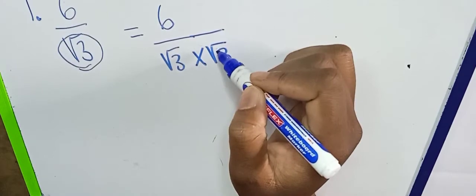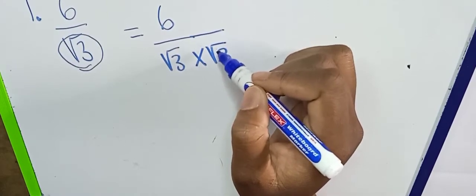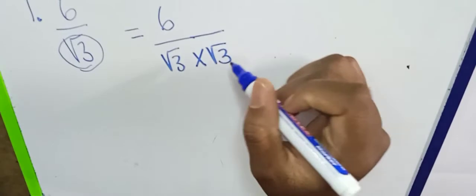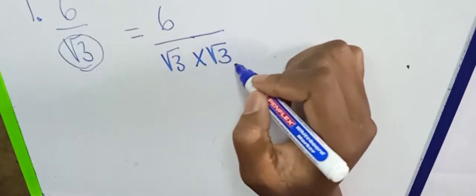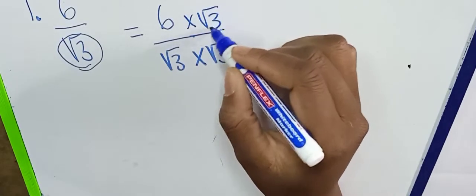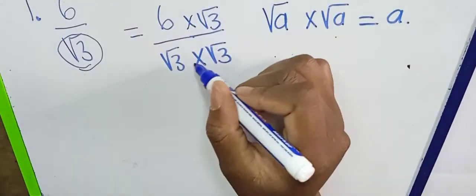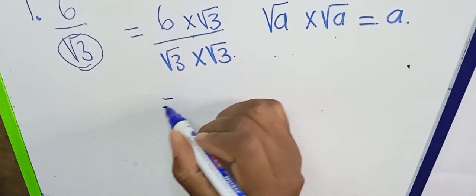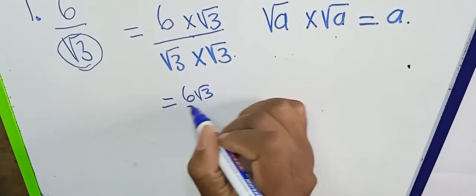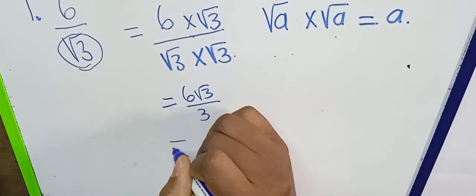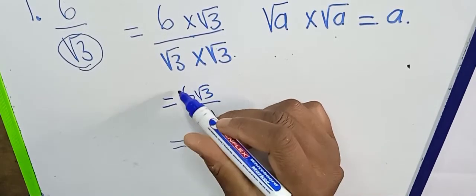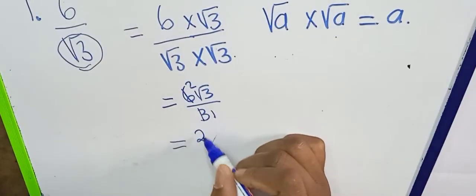So to get rid of this surd number from your denominator, you multiply it by itself. In this case we have root three, so you multiply by root three over root three. What you do on the denominator you must also do on the numerator. So it becomes six times root three over root three times root three. Remember: root a times root a equals a, so root three times root three equals three.